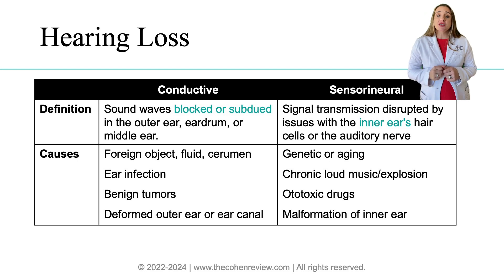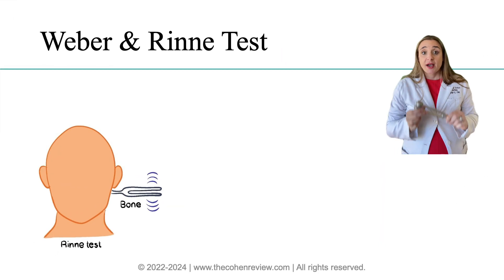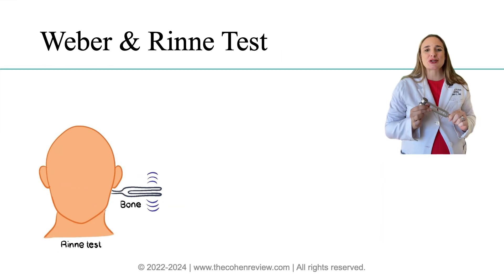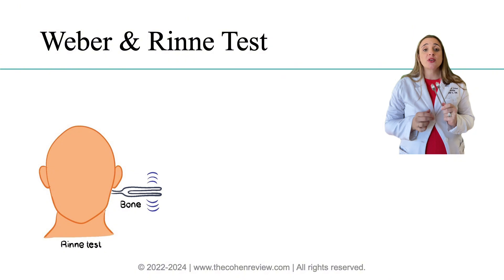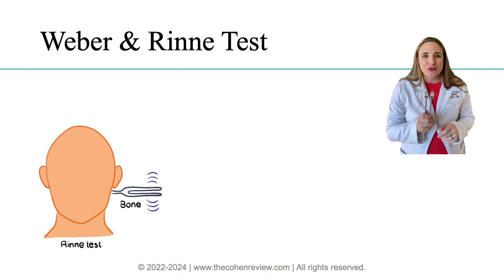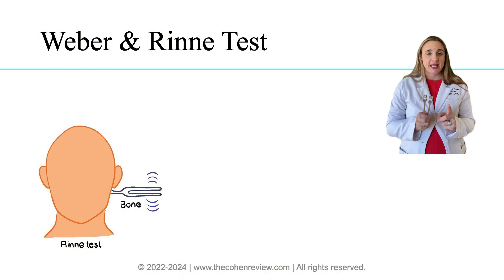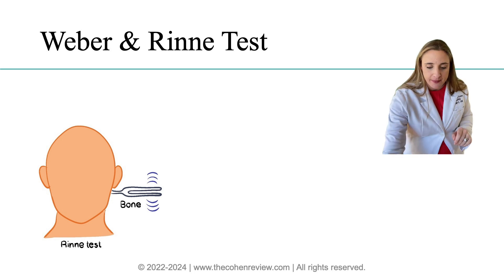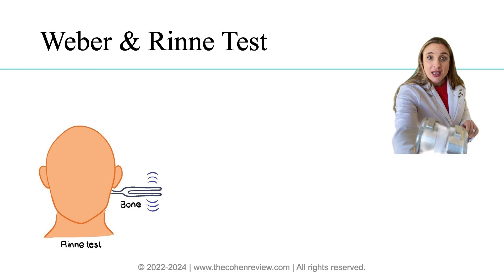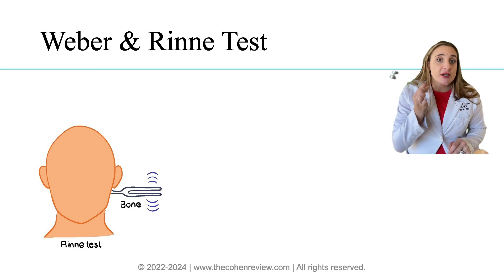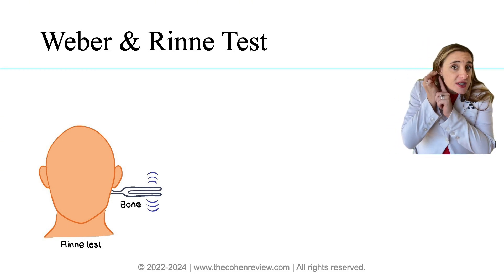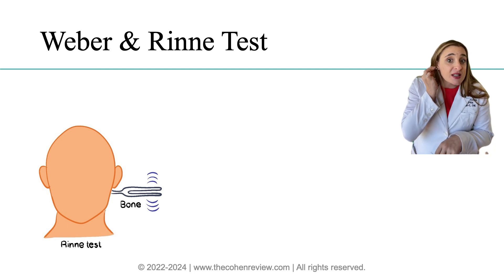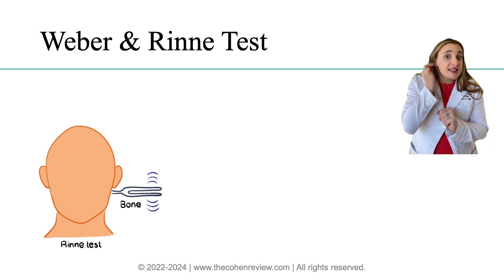Next, let's explore the differences between the Weber and the Rinne test. To perform the Rinne test, first check bone conduction by striking the tuning fork gently on a hard surface to produce a clear ringing sound. Then place that vibrating tuning fork on the patient's mastoid process, which is right behind the ear, and ask the patient to indicate when they can no longer hear the sound.